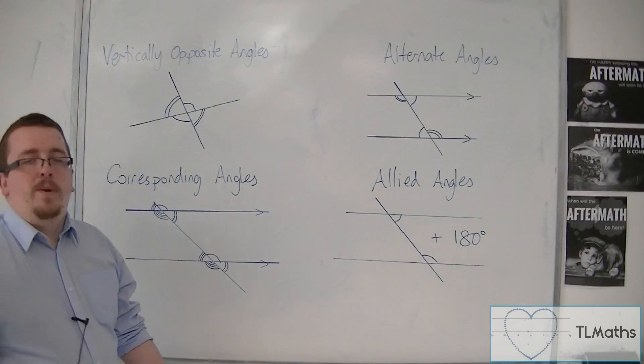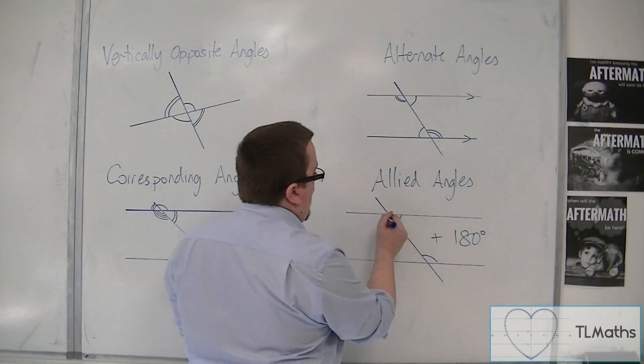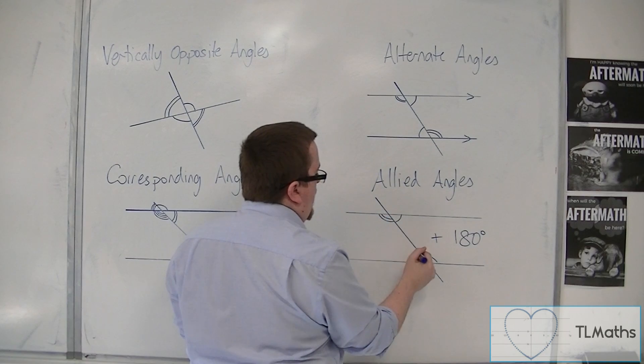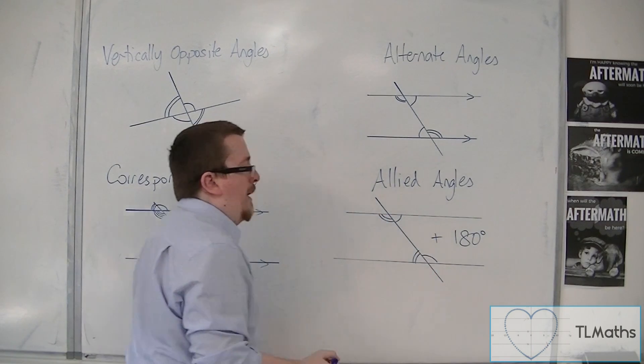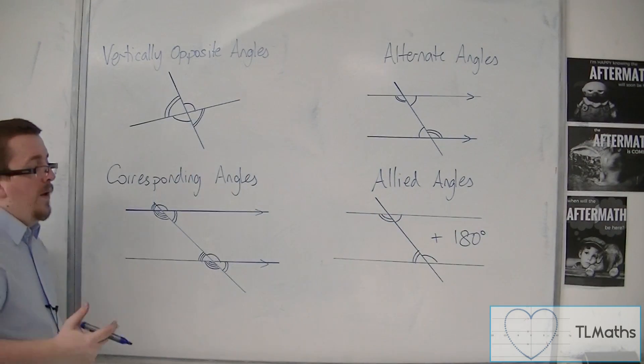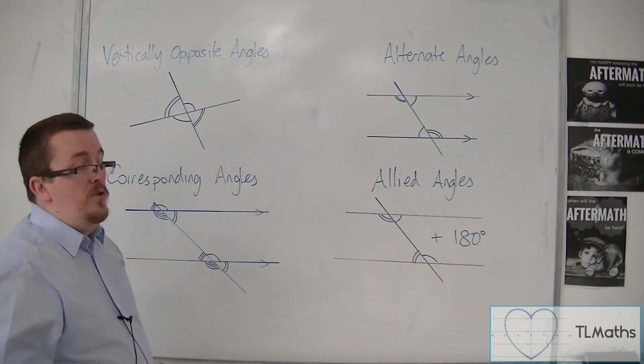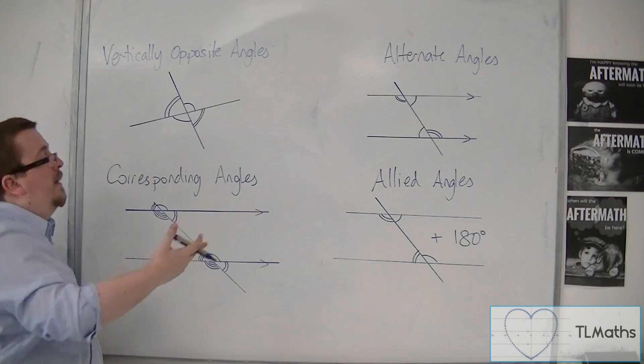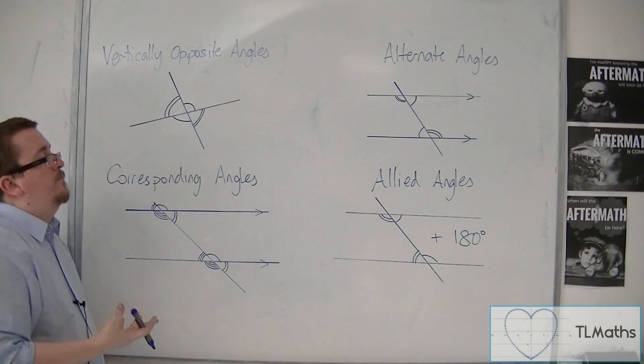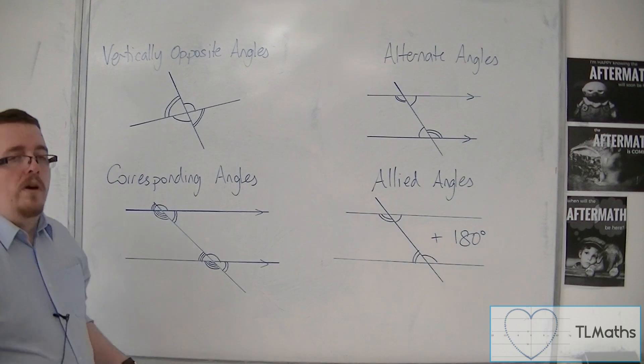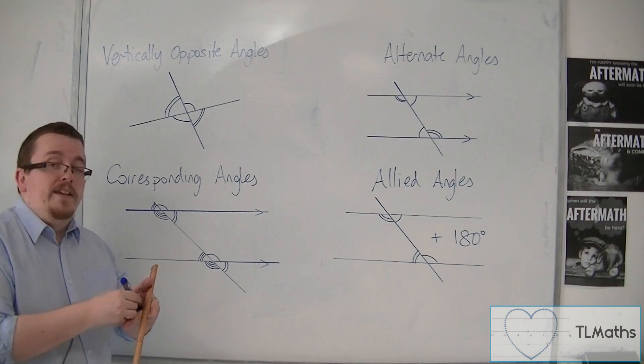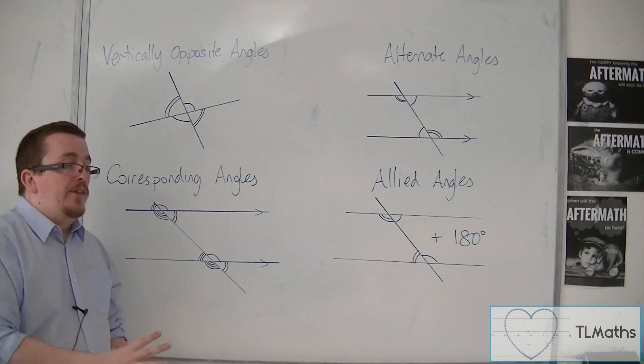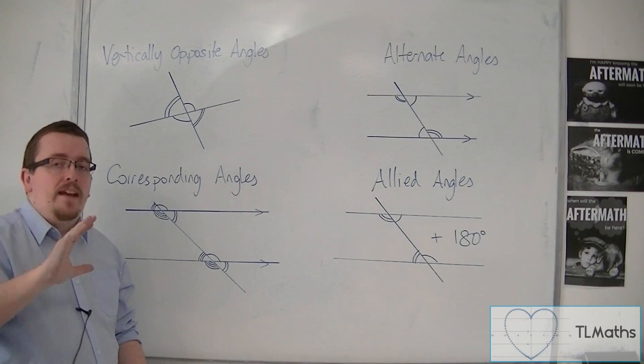And these add to make 180 degrees. So when you add those two angles together, you will get 180. And likewise, these two angles here would also be referred to as allied. Now, when you're dealing with bearings questions, when you've got two north lines that are parallel, well, these facts and these properties, rather, are really useful to remember. And we're going to see that in the next few videos.